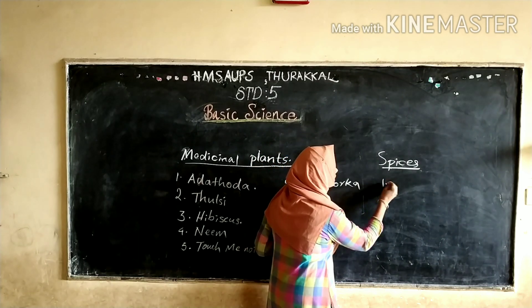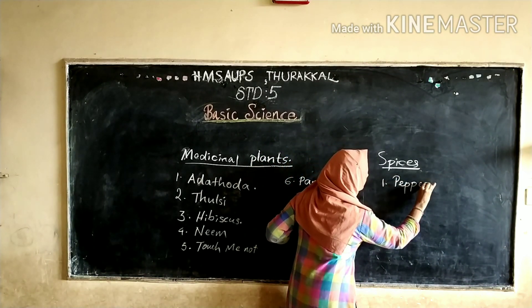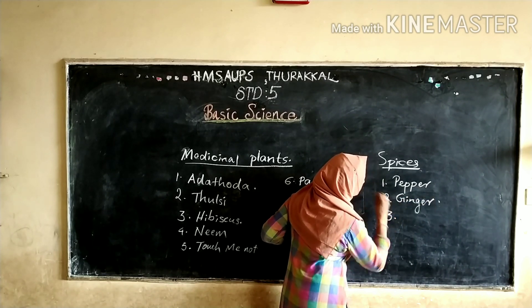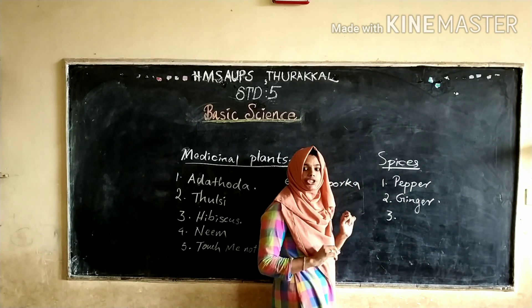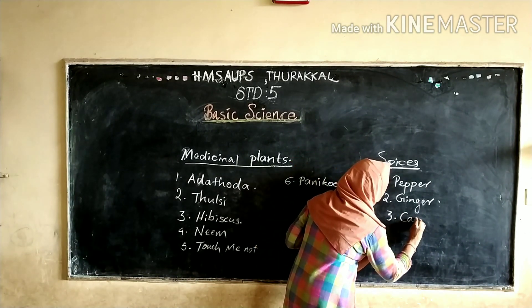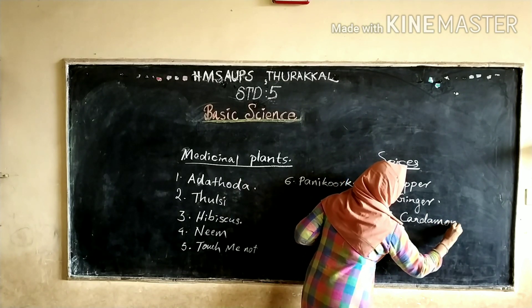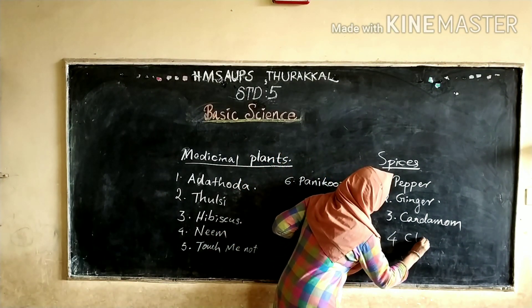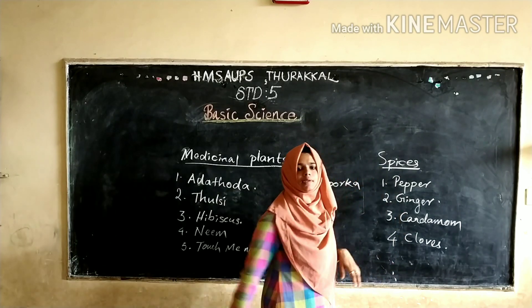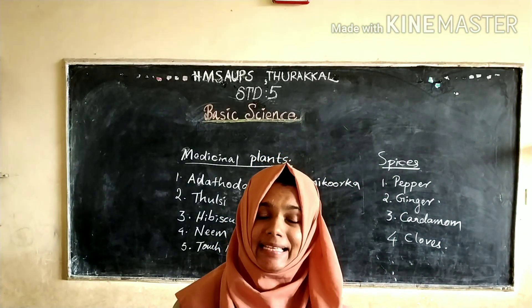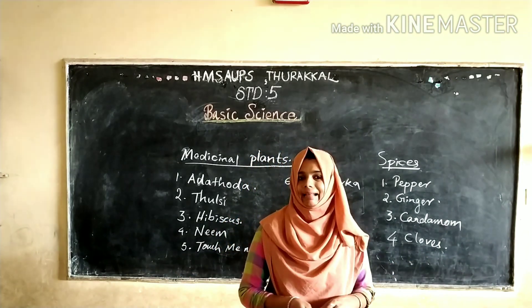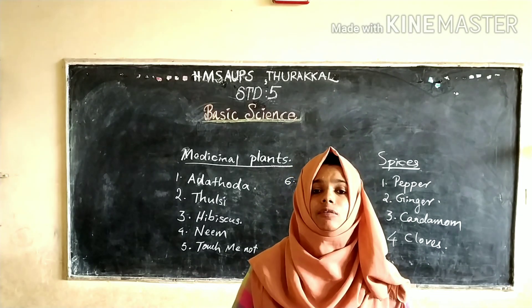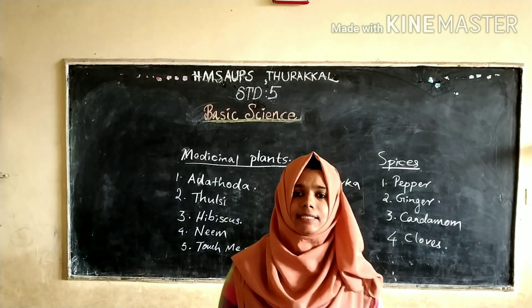Examples of spices: first one, pepper; second one, ginger; third one, cardamom; fourth one, cloves. So many medicinal plants and so many spices are available in our locality. We can choose them for our food and for relieving our diseases.